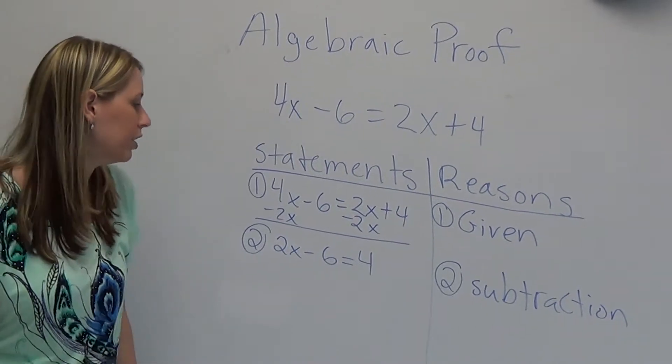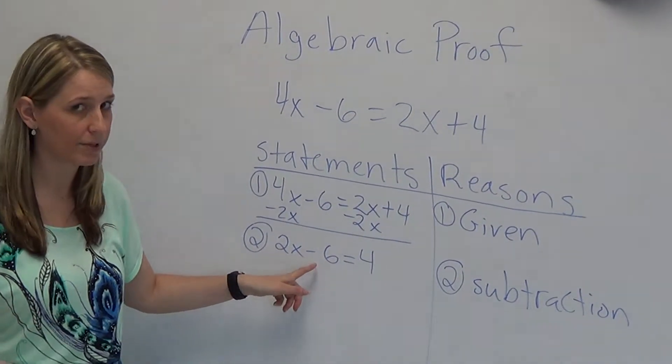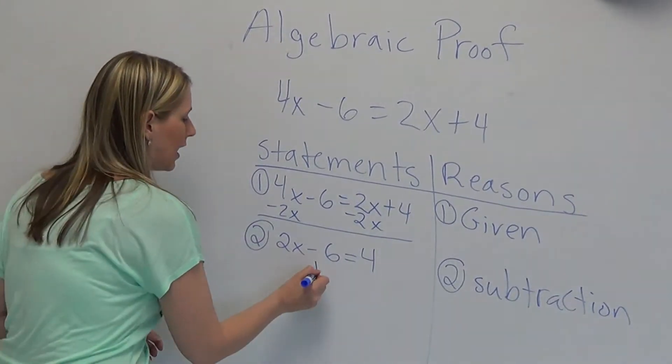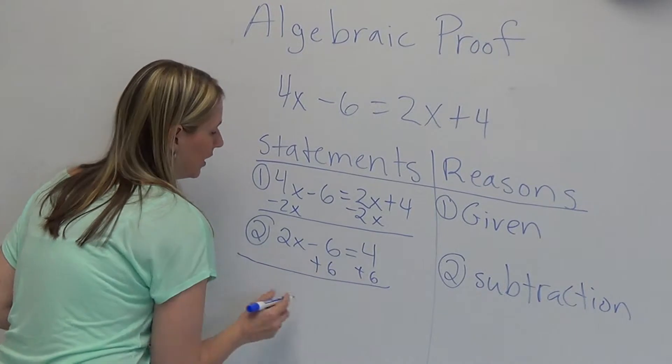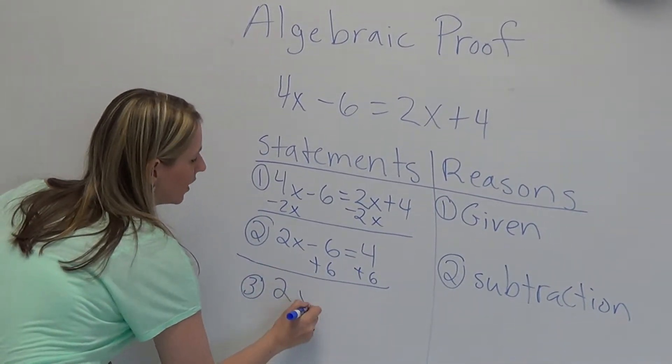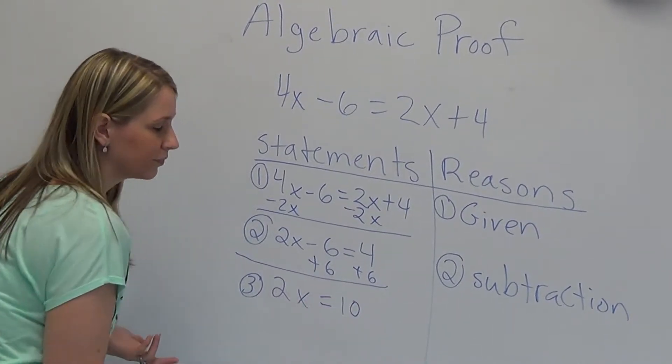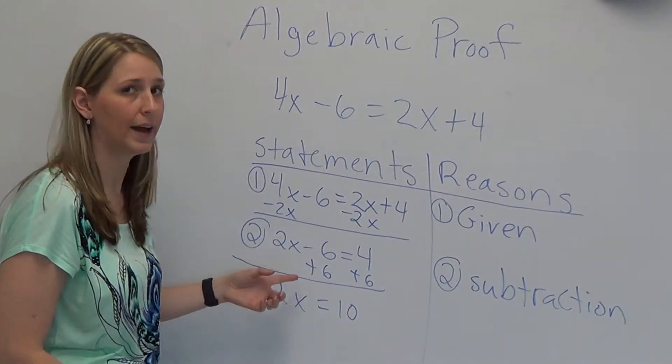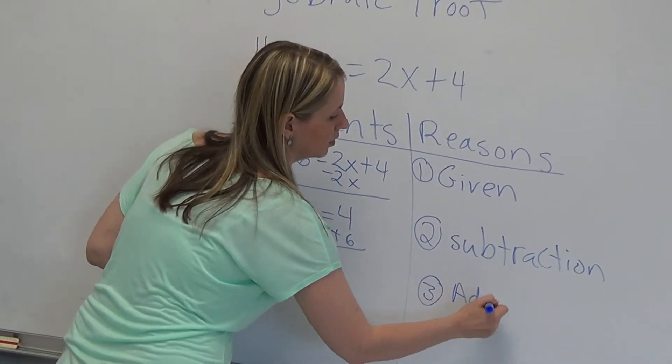So we'll look at our next step. I need to get rid of the 6. It's being subtracted, so you do the opposite. You add. So we're going to add 6 to both sides. And what I get for my step 3 is 2x, the 6 is cancelled out, is equal to 10. Now how did I get from here to here? I added. So my reason is addition.